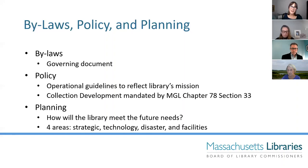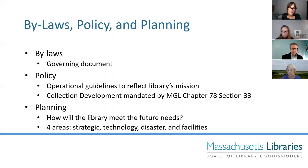This sort of planning may reveal inadequacies that could lead to renovation or new construction. One of the programs at MBLC is our public library construction program — a very competitive grant program which offers about 40 to 50 percent of construction costs, requiring a local match. In August 2020, Governor Baker signed an act financing the general government infrastructure of the commonwealth, which included $115 million for the public library construction program. This money will be used to fund remaining construction projects on our waiting list developed during the last construction grant round in 2017.